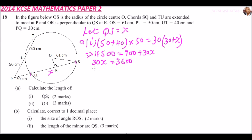So if you divide both sides by 30, you get x equals to 120 cm. So that's how you get that. Roman numeral two: we are supposed to find the length of OR. OR is this here.